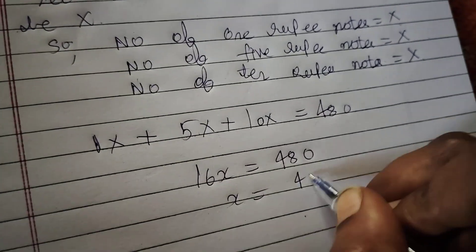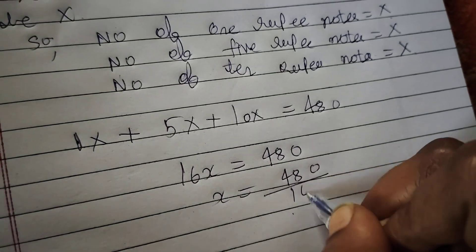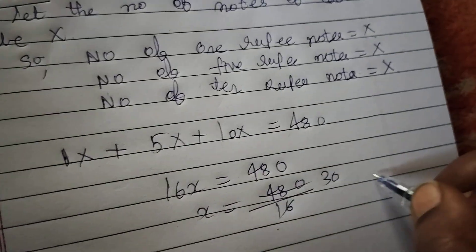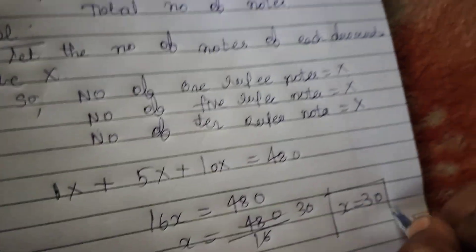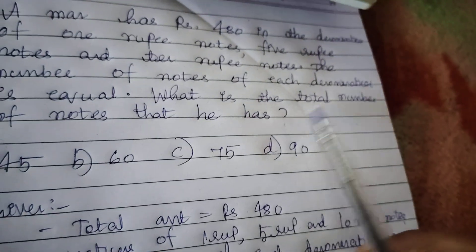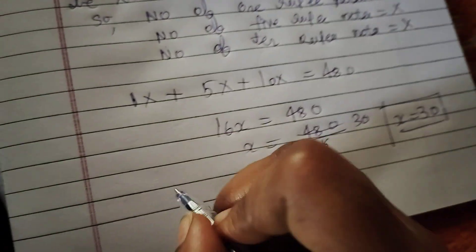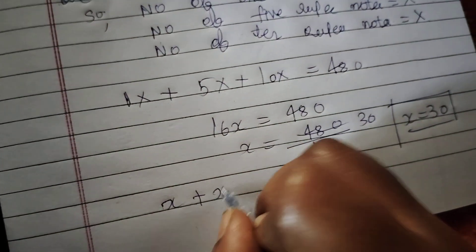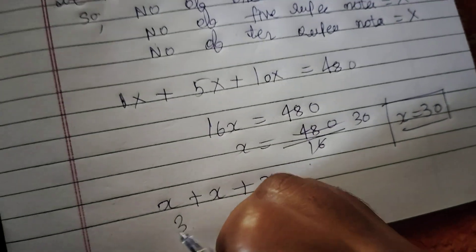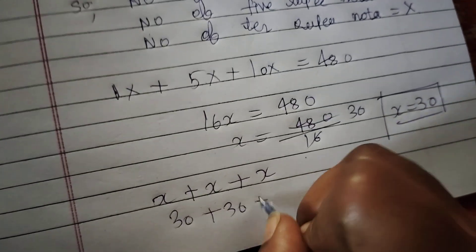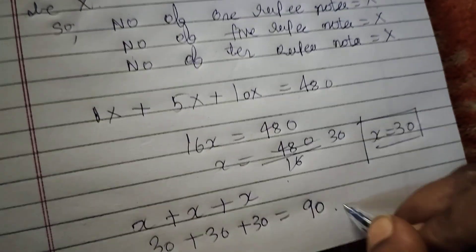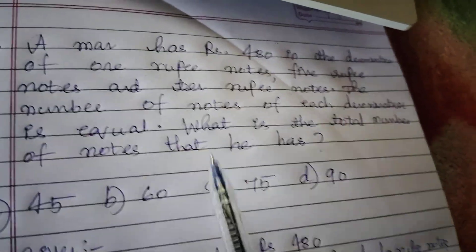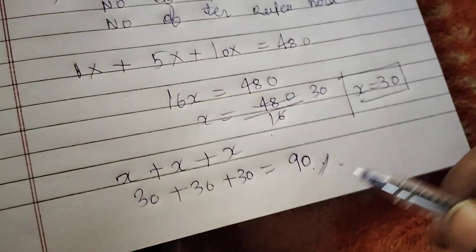So, x = 480 ÷ 16. Since 16 × 3 = 48, x = 30. They have asked for the total number of notes, which is x + x + x = 30 + 30 + 30 = 90. The total number of notes is 90.